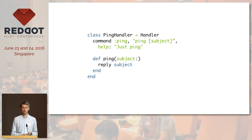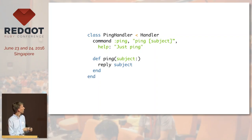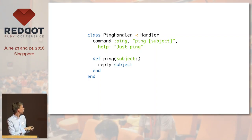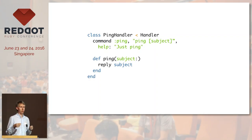This is how the DSL looks. It's very similar to Lita, but instead of defining a regular expression, you define a special pattern. You also define a help string. When the pattern is matched, it's dispatched to a Ruby method with keyword arguments. In this simple case, it will reply with the same command.